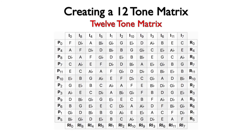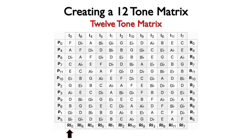Here we have the 48 possible versions of our row: the transposed versions represented by P for prime, the retrograde versions represented by R, the inverted versions represented by I, and the retrograde of the inversions represented by RI.